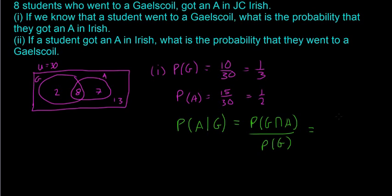And this one on top, G and A, that's going to be 2 over 30, because there's—sorry, not 2 over 30, my mistake. It's going to be 8 over 30, because there's 8 students who went to a Gaelscoil and got an A, divided by the probability of going to a Gaelscoil is 1 over 3.